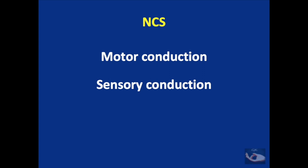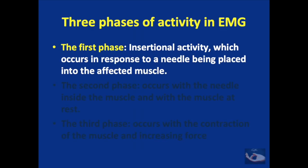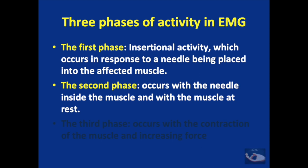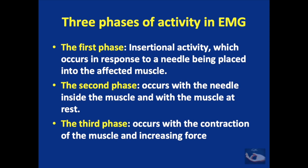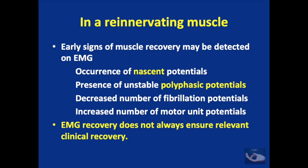Nerve conduction studies are divided into motor and sensory conduction studies. When the needle is inserted into a muscle, there are three phases of EMG activity: insertional activity, the muscle at rest with the needle inside, and the phase when muscle contraction begins and force increases. In a denervated muscle, normal features are absent; instead we see fibrillation potentials, positive sharp waves and prolonged F waves. When the muscle begins to re-innervate, signs include the occurrence of nascent potentials, unstable polyphasic potentials, decreased fibrillation potentials and increasing numbers of motor unit potentials.